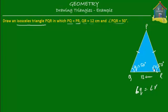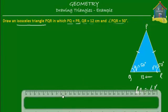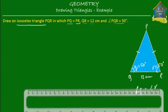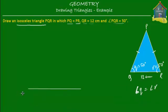Now it becomes fairly easy to draw this triangle. Let's take a ruler and draw a side of 12 centimeters — draw a line from 0 to 12. This is Q, this is R, and this is 12 centimeters.